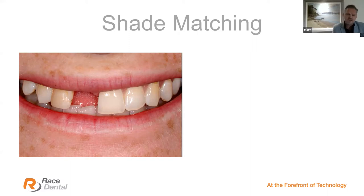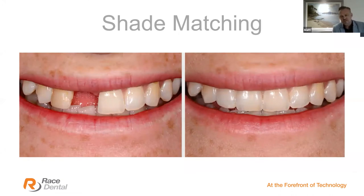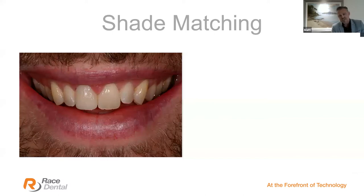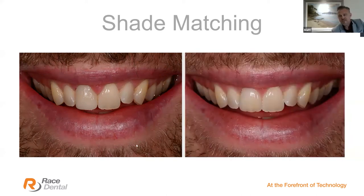How do we manage to get results like these? A lot of our clinicians like to send patients down to the lab, but it's really unnecessary. Here's another difficult case with lots of translucency, internal characteristics, mammalons, and halos. We're going to learn what we need as technicians to ensure we get these shade matches correct — and hopefully correct first time. Time is money, and getting it right in one go is paramount to the success and longevity of a successful business and clinic.